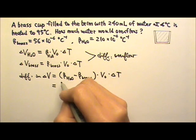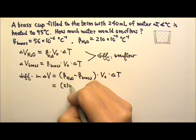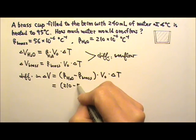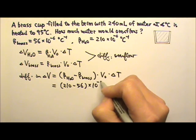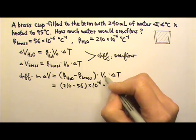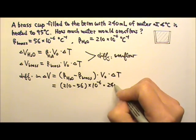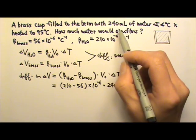Now let's see, the beta for H₂O is 210, and that's 56. Of course there's also the multiplied by 10 to the negative 6. The volume is 240 milliliters.